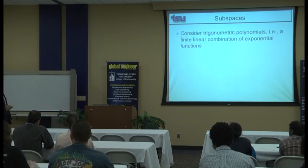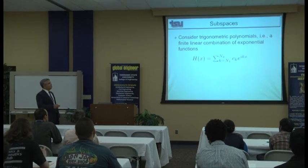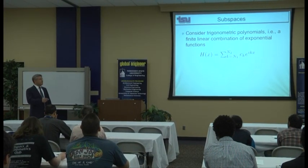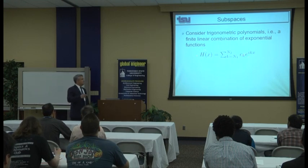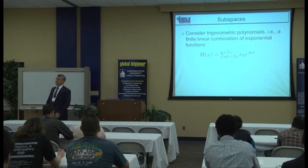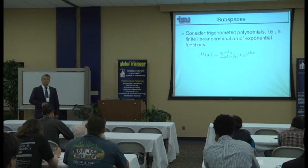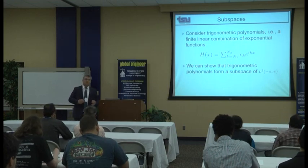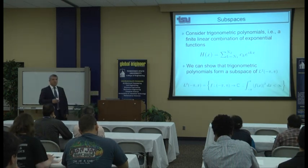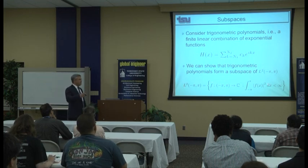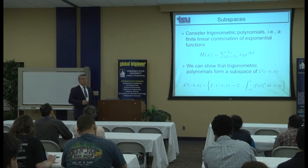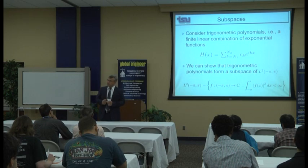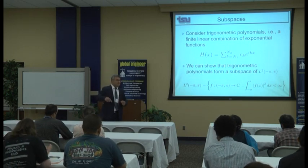Now a more subtle subspace example: trigonometric polynomials. A trigonometric polynomial is a finite linear combination of complex exponentials. For example, H(x) is a finite linear combination of certain complex exponentials. We are going to show that the set of trigonometric polynomials is a subspace of L2 space. Recall that L2 is the space of functions whose energy in one period is finite. Any trigonometric polynomial is in L2, meaning the set of exponential polynomials is a subset of L2 — and in fact a subspace.